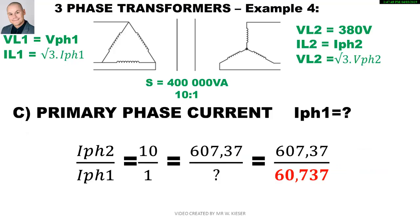To calculate the primary phase current, we use the transformer equation with the secondary phase current we just calculated. The secondary phase current of 607.74 amps is the larger value; dividing by the turns ratio of 10 gives a primary phase current of 60.74 amps.